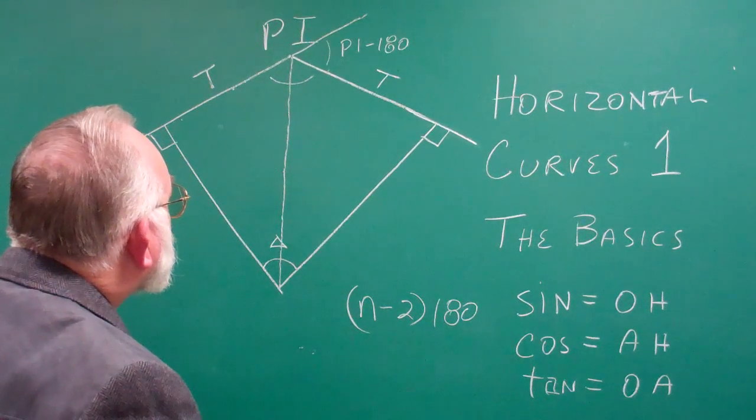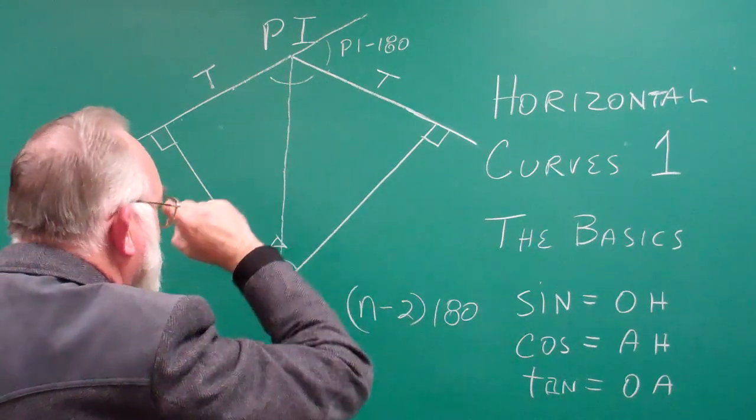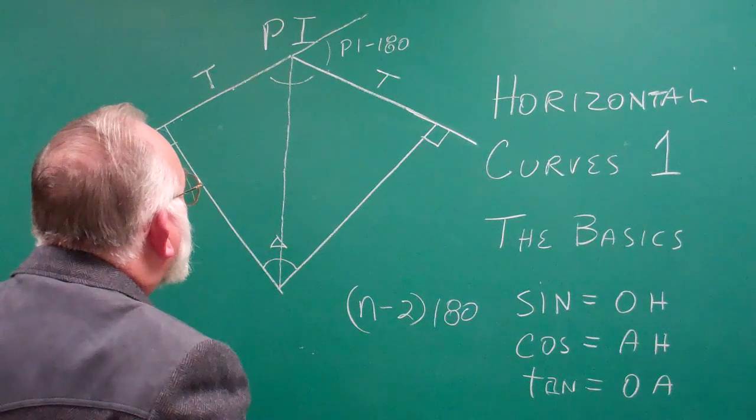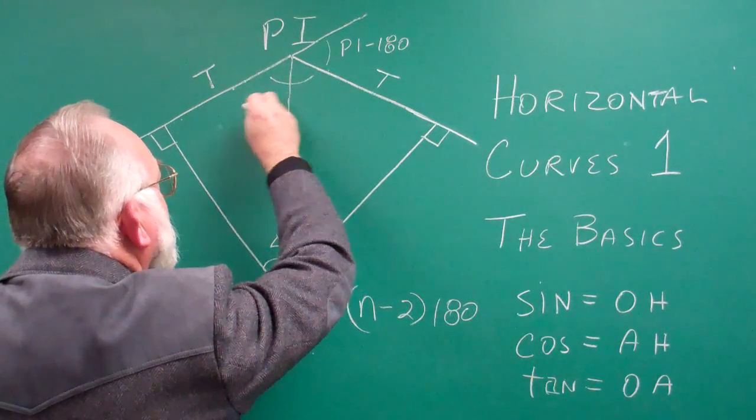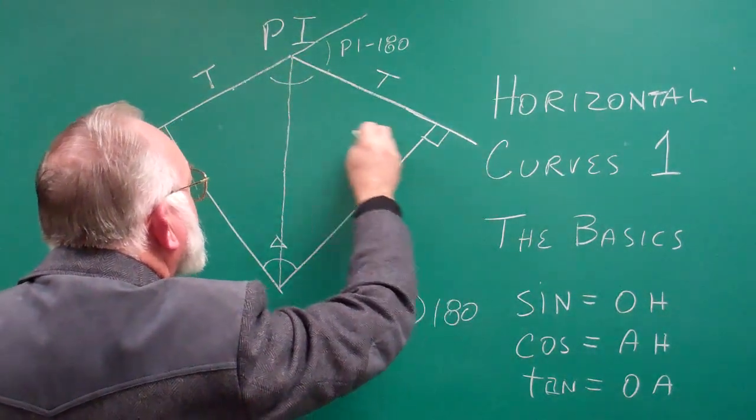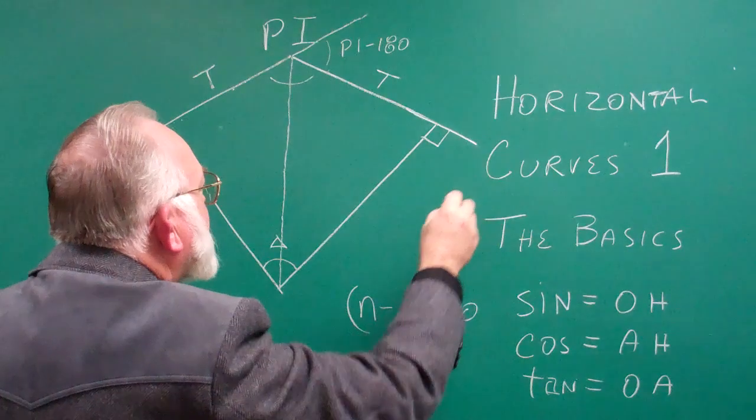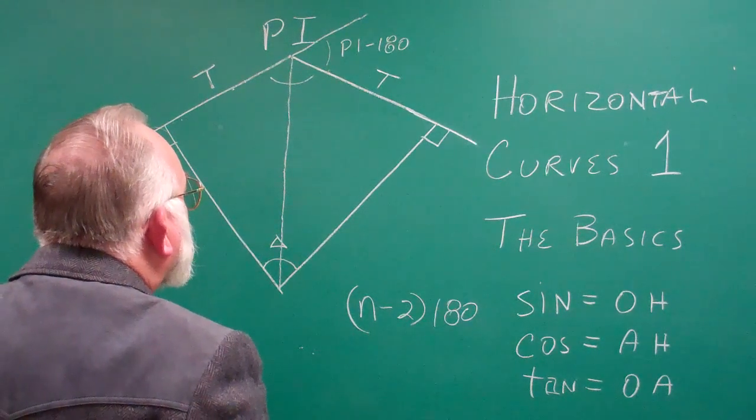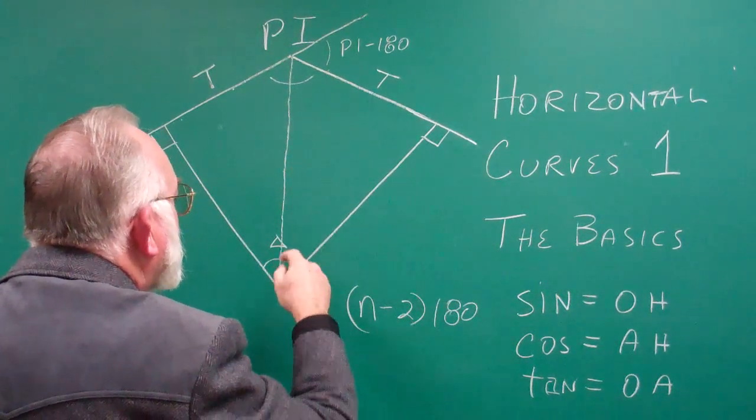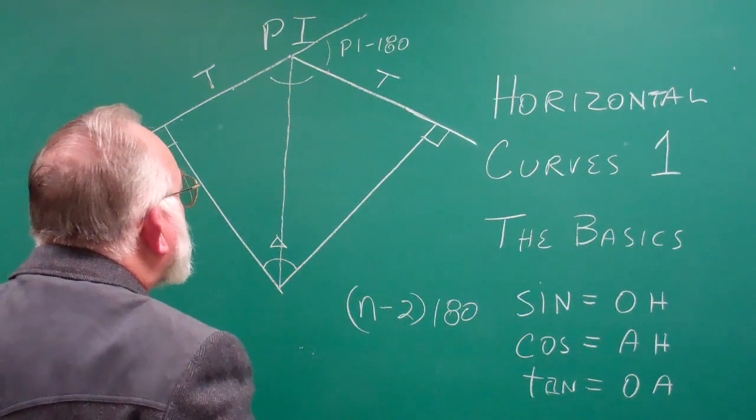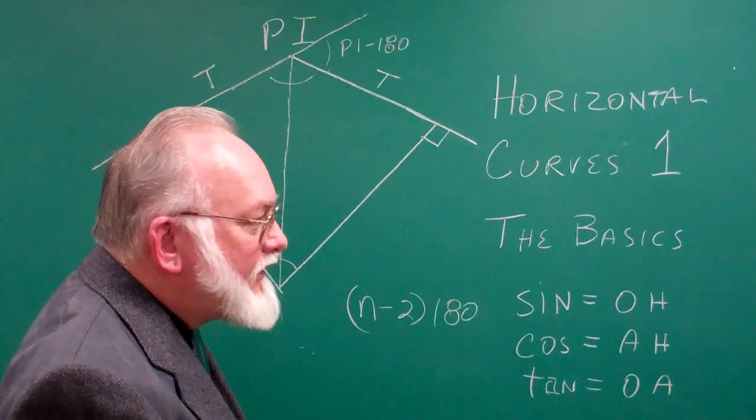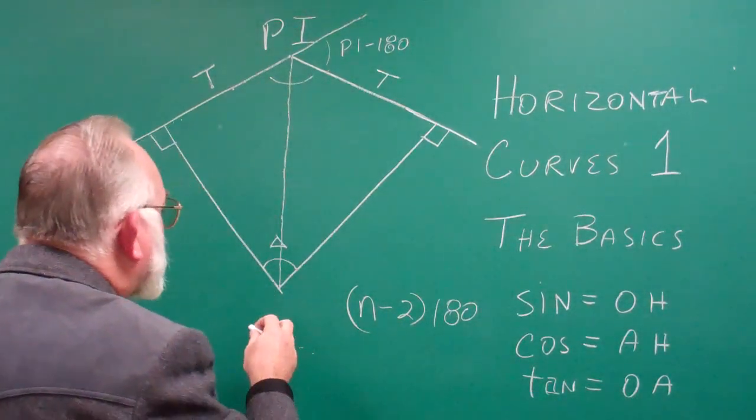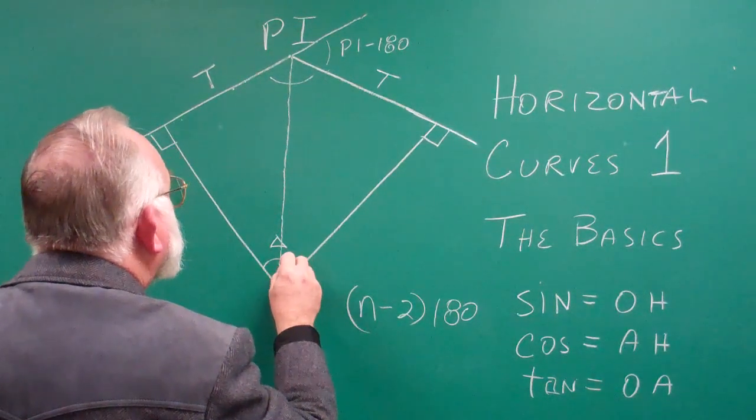So when it comes time to figure out the lengths of the two lines, all you need to know is this angle formed by these two bearings intersecting, and then this angle will be 180 minus whatever that is. For the purposes of all of our calculations, because we're dealing with right triangles, you take half of that delta angle.